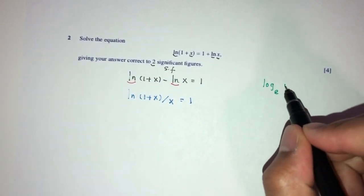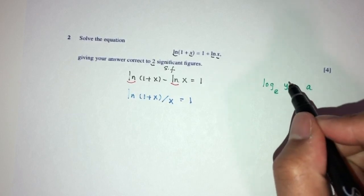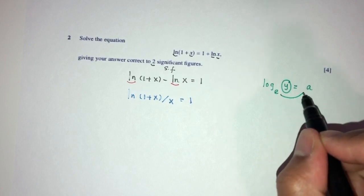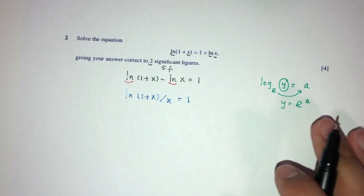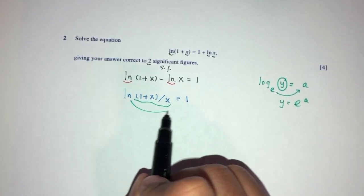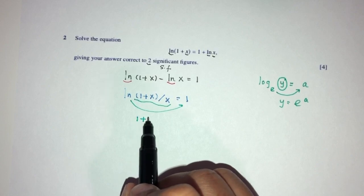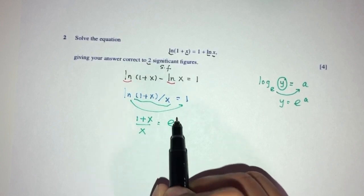Let's say we have y here equal to something, a. To find the value of y, I have to send the base over here. So y will be exponential a. So same reasoning for this one. To find the value inside, I have to send the base over here. So that will be 1 plus x over x has to be exponential. Power of 1 is just exponential.